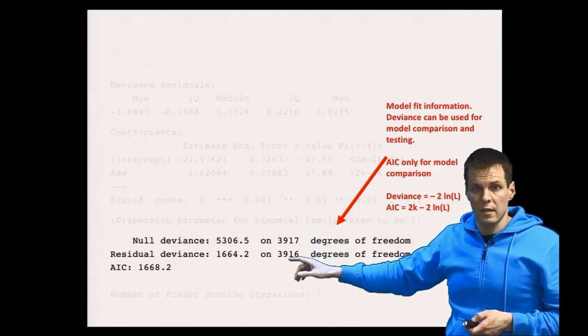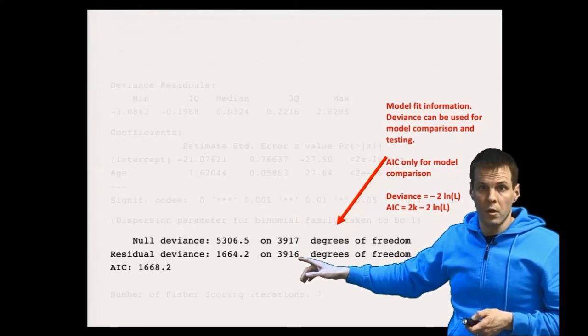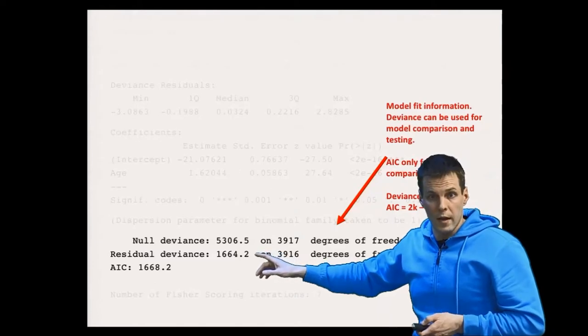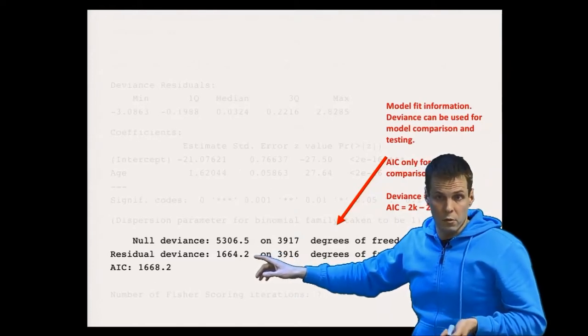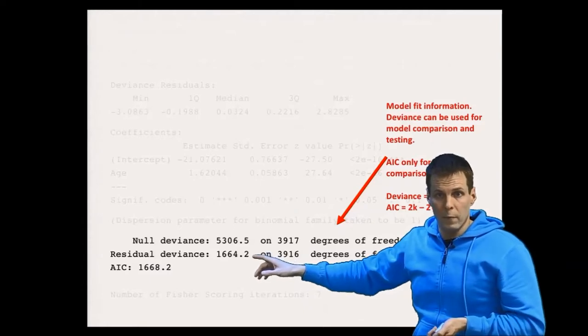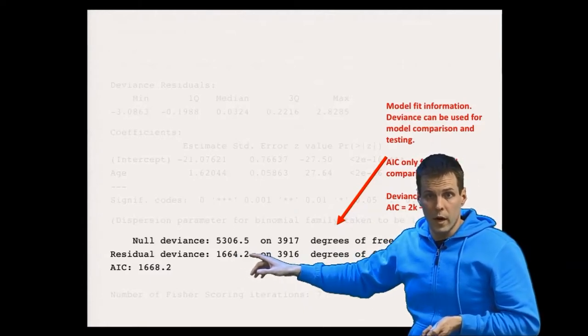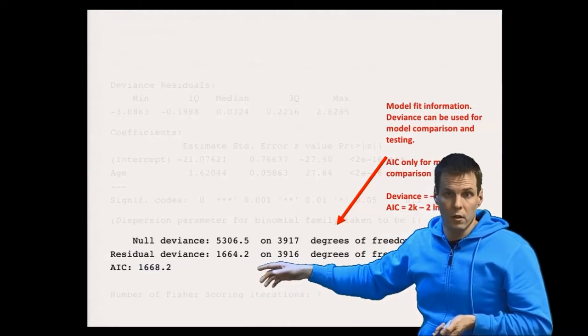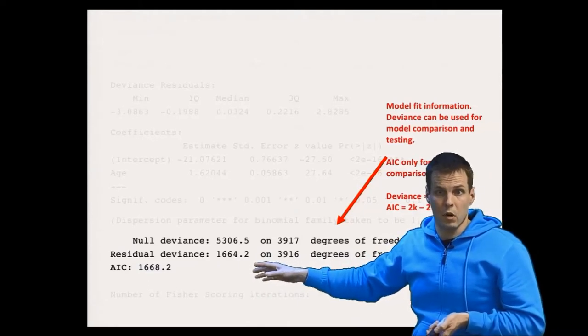We have 3916, so we lost one degree of freedom because we had one independent variable. This is the overall deviance, which is minus two times the log likelihood. So minus two times log - if we multiply this by minus half, then that's the value of the log likelihood that the computer actually minimizes when it estimates the model.